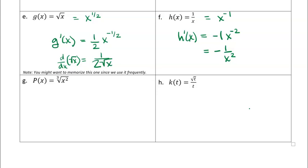I should mention that it's a good idea to always label your derivatives. You notice I'm writing g prime of x is equal to this, and h prime of x is equal to this — because it's a new function, not the same as the original. If you don't label it as a different function, you can get confused, especially when we start doing application problems and taking derivatives, or when we learn about second derivatives.